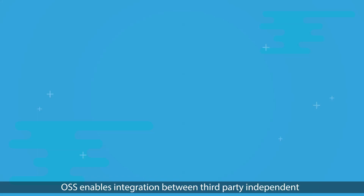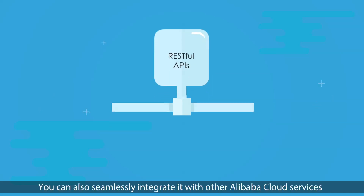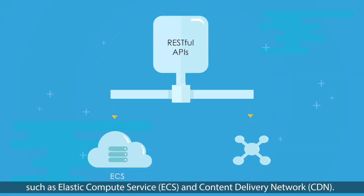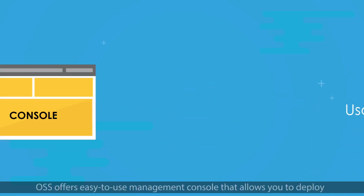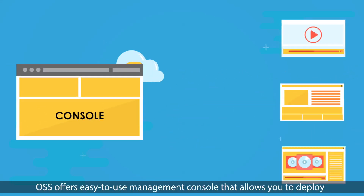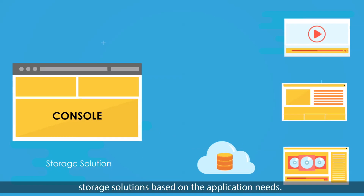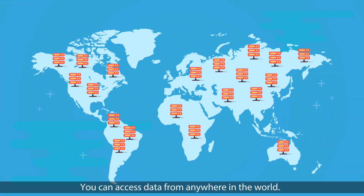Integration: OSS enables integration between third-party independent software vendors by using RESTful APIs. You can also seamlessly integrate it with other Alibaba Cloud services such as Elastic Compute Service and Content Delivery Network. Usability: OSS offers an easy-to-use management console that allows you to deploy storage solutions based on application needs, and you can access data from anywhere in the world.